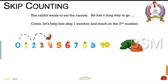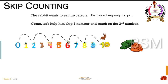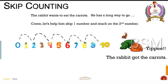Where will he jump now? On 6, and now on 8, and then on 10. And with one more jump he reaches his carrots! The rabbit reached the carrots and got to eat them. He skipped by 2 — you let go of one number and reach on the second number. So when the rabbit jumped from 0 to 2, he left 1 and reached on 2.